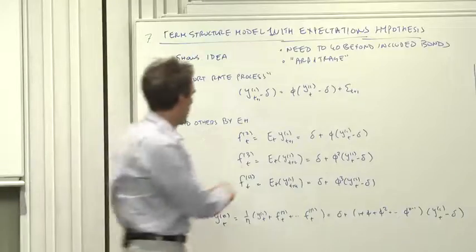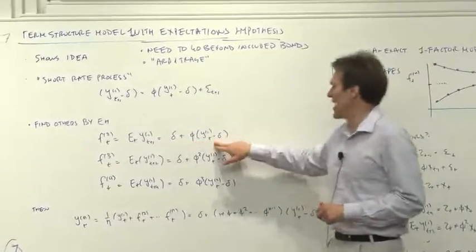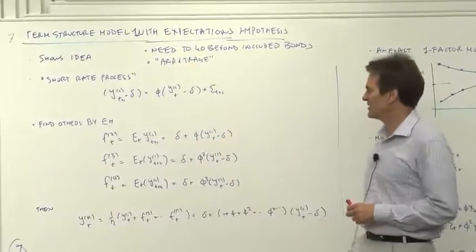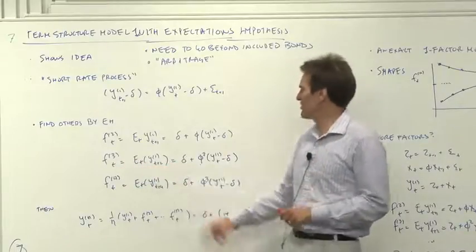Our second ingredient is a pricing model, and let's find the other prices by the expectations hypothesis. So the forward rate, the two-year forward rate, is the expected short rate tomorrow. With an AR1, you know how to do that, just phi times y1 minus delta. The three-year forward rate is the expected short rate two years from now. That's just phi squared, and so on and so forth.